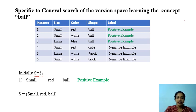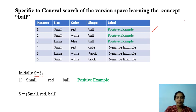Now let us consider the first training instance: small, red, ball — which is positive. We check whether we can accept this positive instance using our current hypothesis. We cannot accept it, so we modify our hypothesis to accept this positive example. The hypothesis is now (small, red, ball).